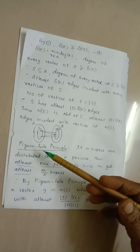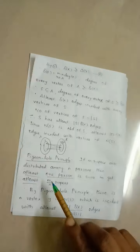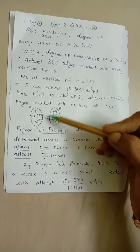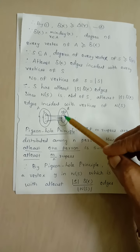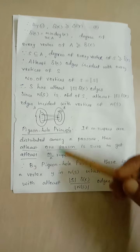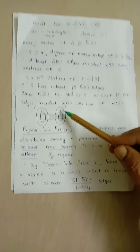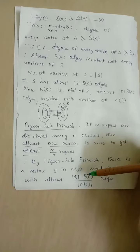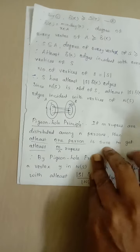We know the pigeonhole principle, which states that if M rupees are distributed among N persons, then at least one person is sure to get at least M/N rupees. Here, we distribute |S| · δ(X) edges of S to the set N(S). Using the pigeonhole principle, there is one vertex y in N(S) which is incident with at least |S| · δ(X) / |N(S)| edges.